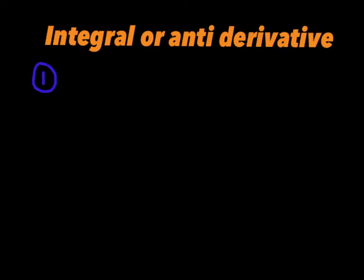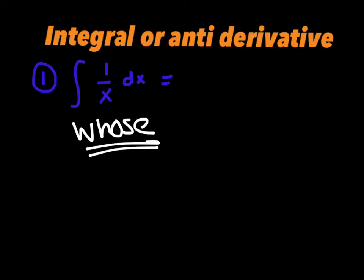Now let's dive into the integral section. Remember, an integral is the anti-derivative — we're going backwards against the derivative. For integrating, we have two key examples. The first: if you see 1 over x, ask yourself whose derivative am I staring at. Well, that's the derivative of ln(x), so the integral of 1 over x equals ln of the absolute value of x plus c.